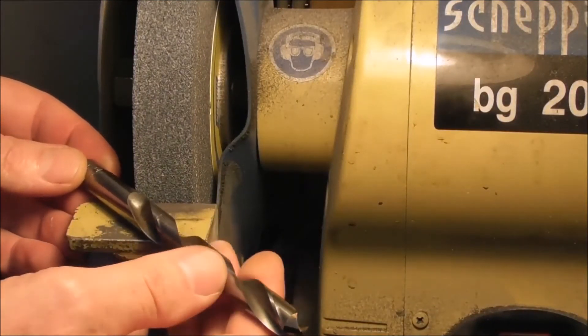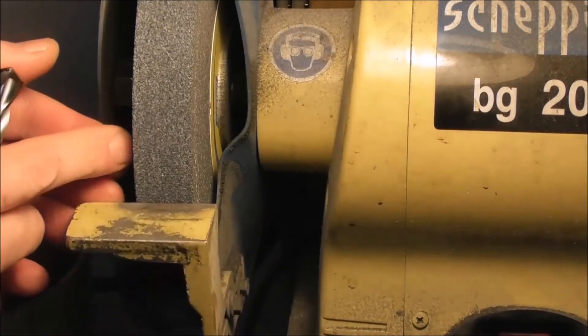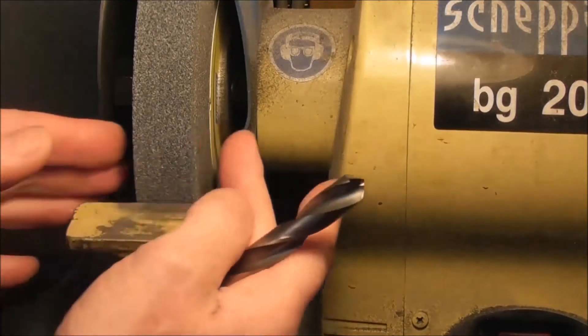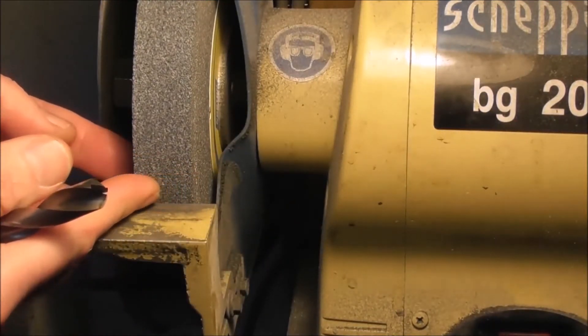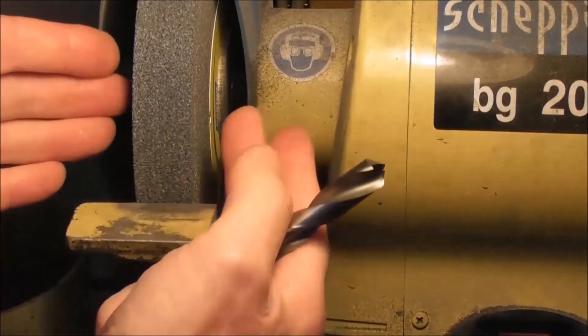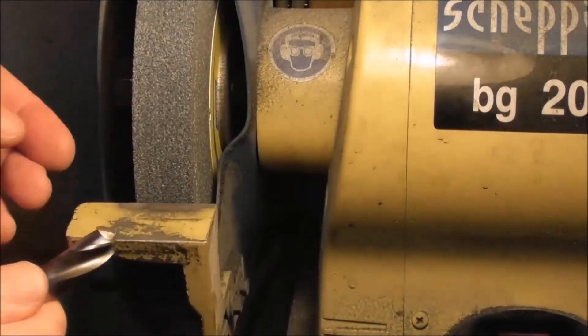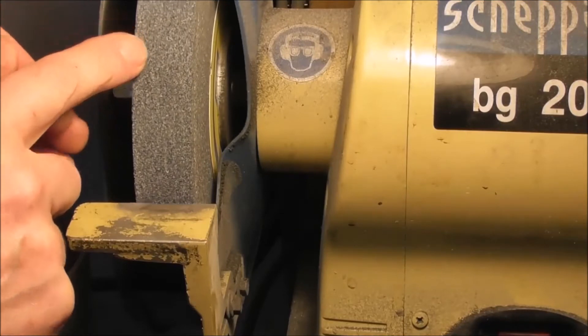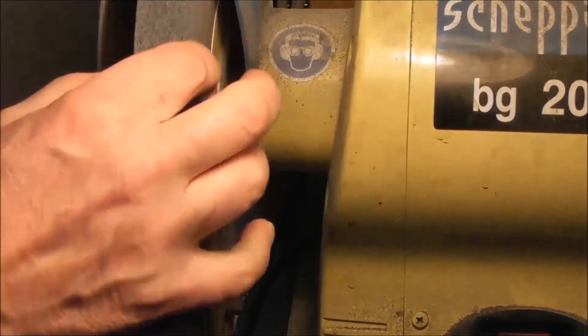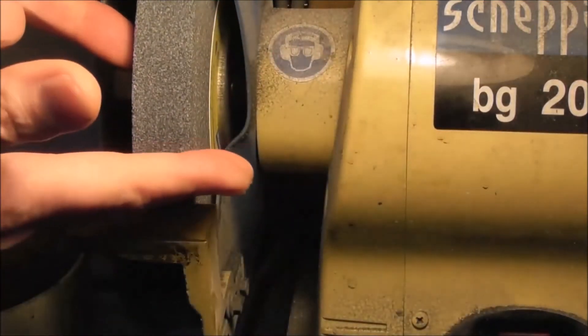You never want to grind on the corner of a wheel like that because you just radius the corner. The corner of the wheel is very fragile and will break down really easily. If it's diamond dressed and sharp, you should be able to maintain a sharp edge.